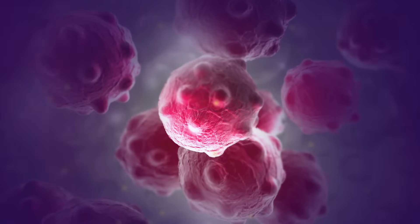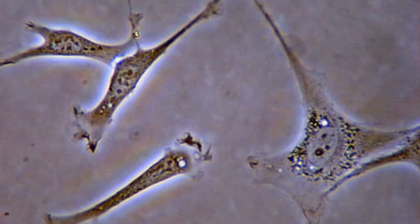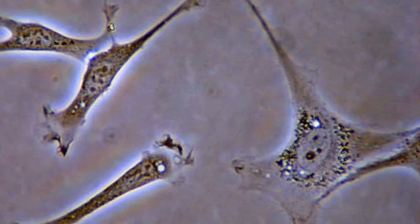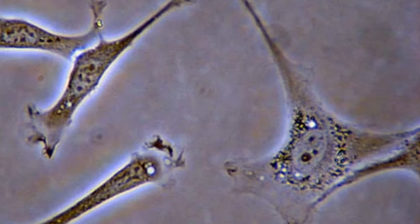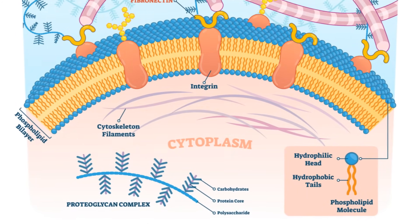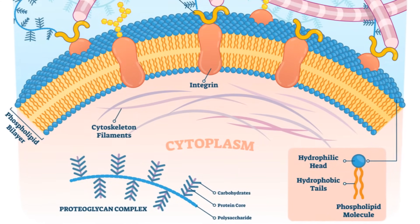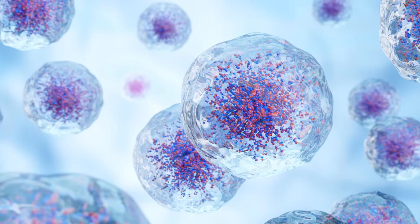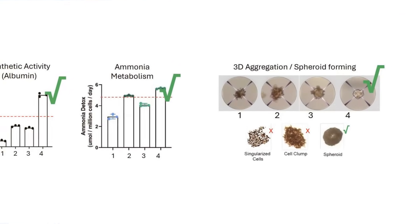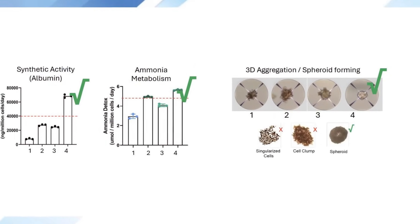Spheroids require special considerations. Typically these structures assemble in about five days, but the process can be accelerated by mixing hepatocytes with other cell types such as stellate cells, fibroblasts, or mesenchymal stem cells. These supporting cells contribute to the production of extracellular matrix, which in turn assists in hepatocyte aggregation. While it's possible to control how large these spheroids become, it's crucial to remember that very large spheroids can develop necrosis at their core, which is far from ideal.